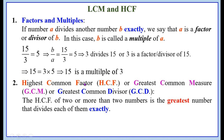Highest Common Factor — HCF, or Greatest Common Measure — GCM, or Greatest Common Divisor — GCD. Generally we use HCF or GCD. The highest common factor of 2 or more than 2 numbers is the highest number that divides each of them exactly, meaning the remainder must be 0.